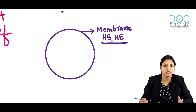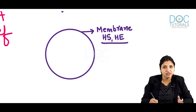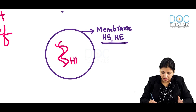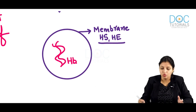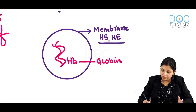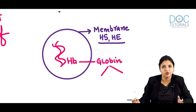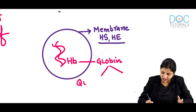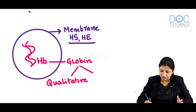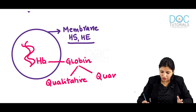Inside the cells there is hemoglobin, and there can be defects in the globin. Globin defects can be of two types: it can be a qualitative defect or it can be a quantitative defect.